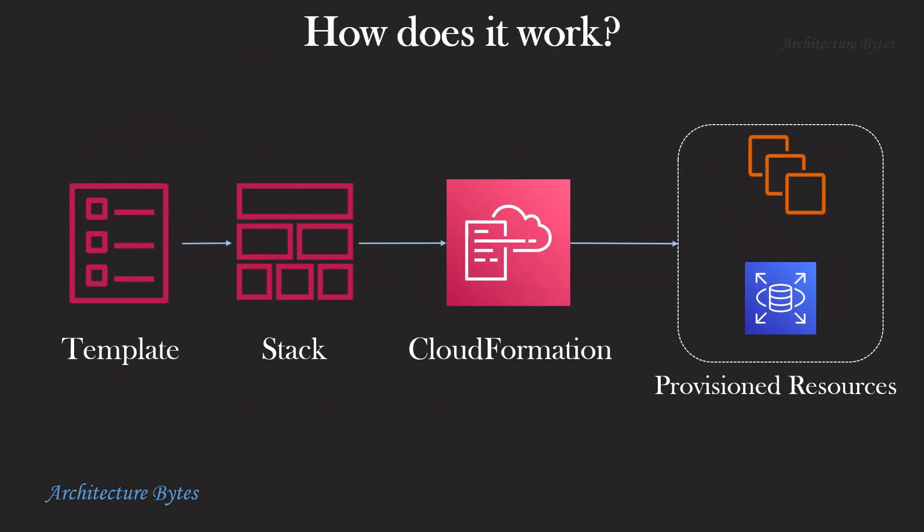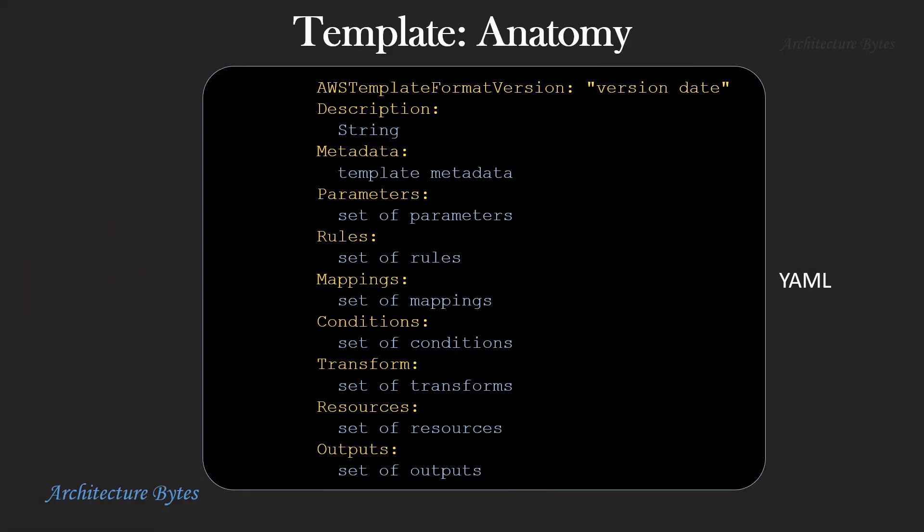Let's look at the structure of a template in a YAML file. There is an AWS template format version at the top, followed by description, metadata, parameters, rules, mappings, conditions, transform, resources, and outputs. Of these, we will focus on resources, which is where we declare the resources to be created.